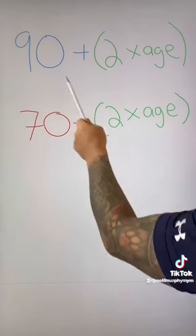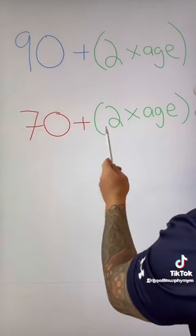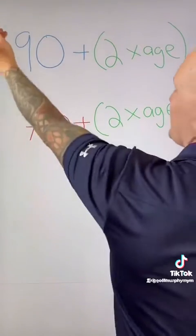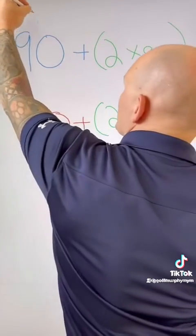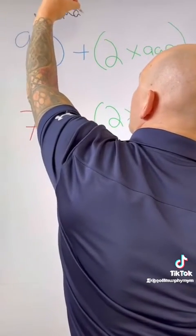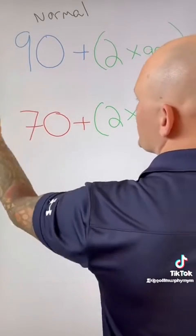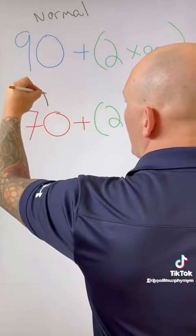First off, 90 plus 2 times their age and 70 plus 2 times their age. What this means is that 90 plus 2 times their age is going to determine your normal blood pressure for that age. And then this is going to determine your high point for hypotension.